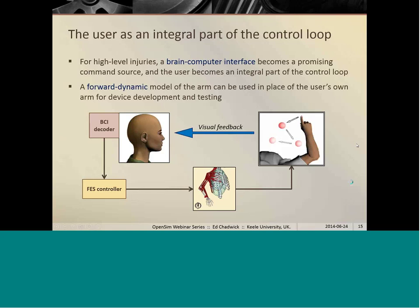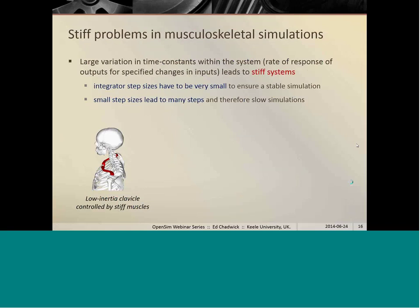Now in order to achieve a very fast simulation, a real-time simulation, that's quite a challenge in a complex, large-scale musculoskeletal system. If we have a large variation in the time constants within the system, i.e. the rate of response of the outputs for a specified change in the inputs can vary greatly, that's what we call a stiff system in this kind of simulation system. So for example here, we've got the clavicle as a very small, thin bone, which means it has a very low moment of inertia, particularly around axial rotation about its own axis.